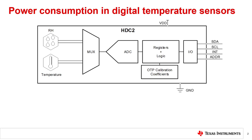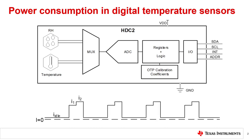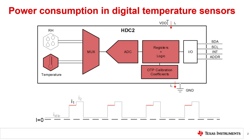A digital humidity sensor will go through three stages during its conversion cycle, wherein it consumes different levels of current due to different portions of the sensor being active. When idle, the sensor is waiting until the next trigger to convert, either from internal settings or an external signal from a controller. In the first active phase, the sensor is converting a raw voltage from the internal sensing element, typically a BJT, to a temperature value in digital that is adjusted based on the device's internal calibration information. Similarly, during the second active phase, the sensor is converting the capacitance measured at the RH sensing element to a raw humidity value based on the internal device calibration.